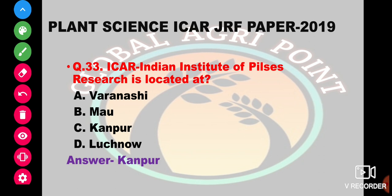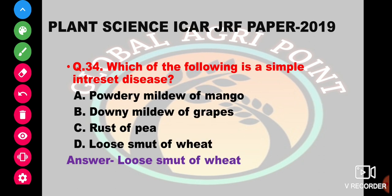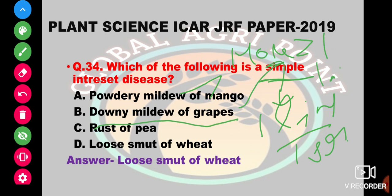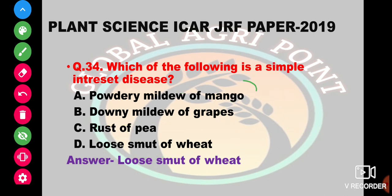Which of the following is a simple interest disease — one that completes its life cycle in only one season? Powdery mildew completes more than one life cycle in one season. Downy mildew is also similar. Rust of pea is similar. Loose smut completes only one life cycle per season. So the answer is loose smut; the rest are compound interest diseases.